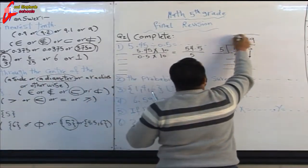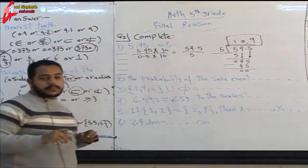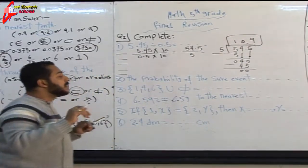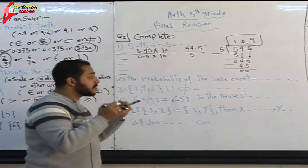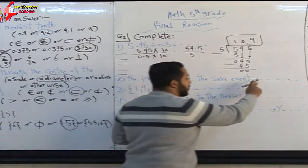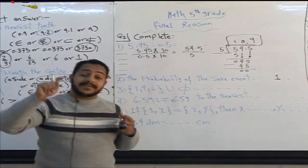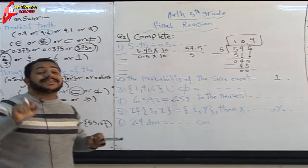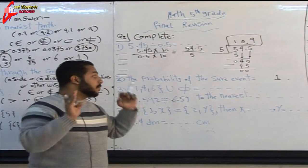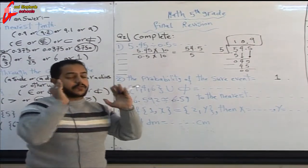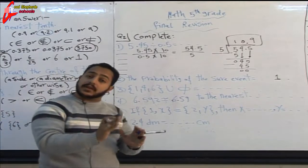Question two complete: the probability of the sure event equals 1. The probability of the impossible event equals 0.